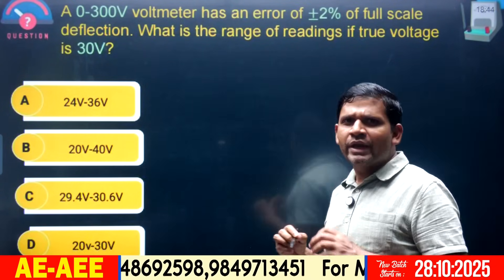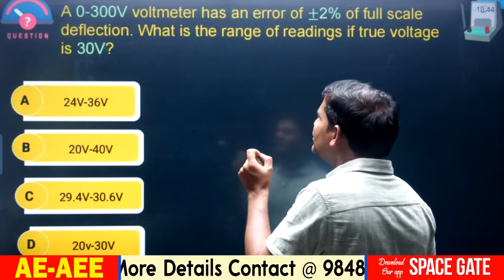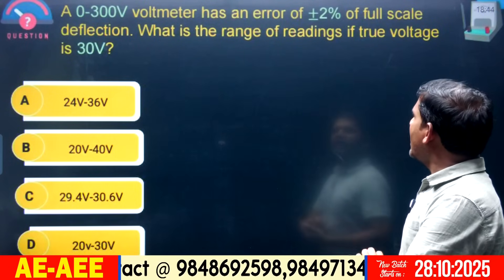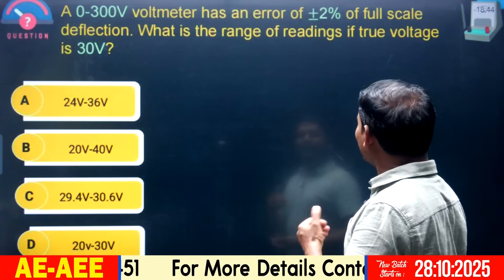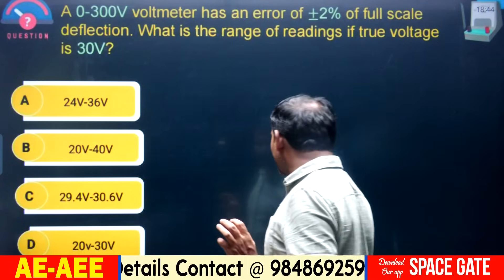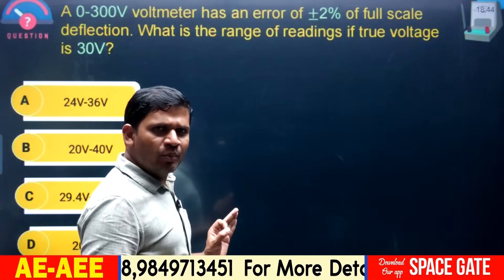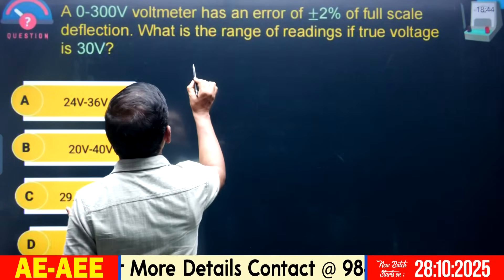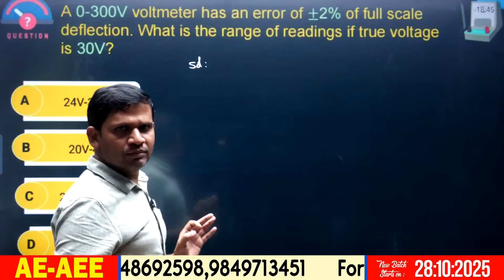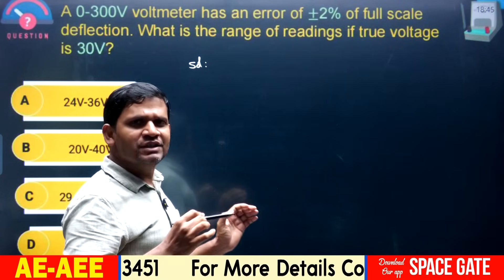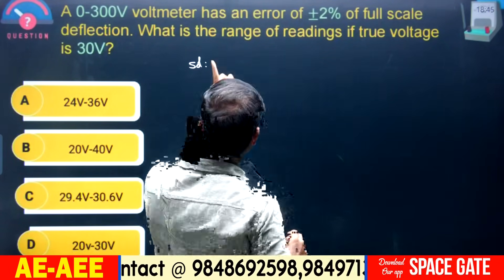Now concentrate on how to calculate the range of measured value in error analysis. A 0 to 300 volts voltmeter has an error of plus or minus 2 percent of full scale deflection. What is the range of reading if the true voltage is 30 volts? This is a simple but important model, repeated in most competitive exams. You need to know the absolute error, which tells the range of measured value.